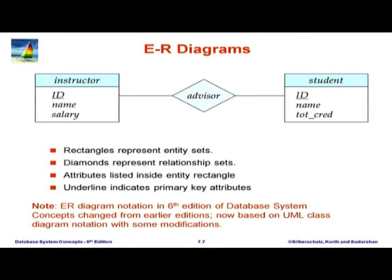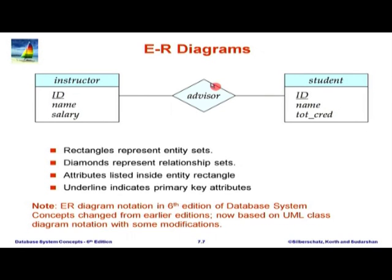Here we have the same two entities with a few extra attributes. Instructor has ID, name, salary; student has ID, name, total credits; and advisor is a relationship between the two. Rectangles represent entity sets and diamonds represent relationships. Within the entity set, the name is shown at the top and attributes below. An attribute which is underlined is a primary key — one or more attributes chosen to uniquely identify an entity in the set.